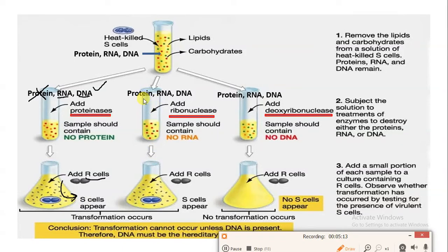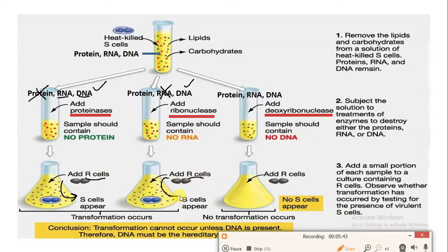In the second experiment, where protein, RNA, and DNA are present in the test tube, ribonuclease is added, which degrades the RNA. Now only protein and DNA remain in the test tube. When this is introduced into a conical flask where R-strain is already present, the R-strain takes up the DNA from the surrounding and gets converted into the S-strain — transformation is observed here as well.